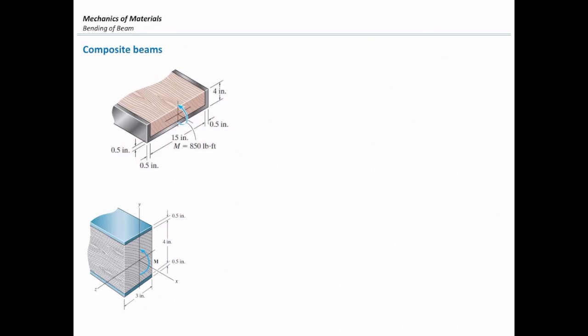Composite beams are elements made of two or three different materials. The reason for combining different materials is to create more efficient sections, more lightweight sections, or stronger sections. There are many applications of composite beams.